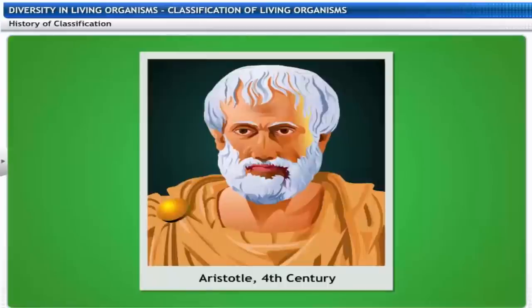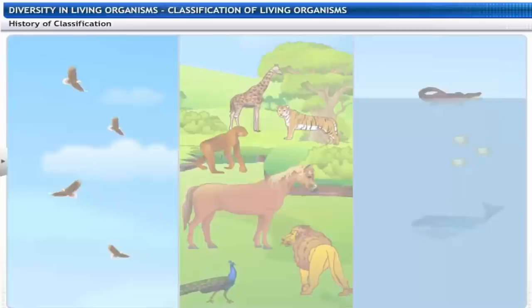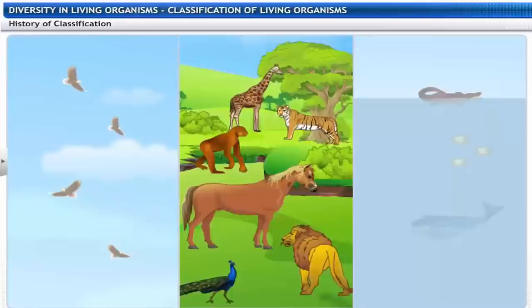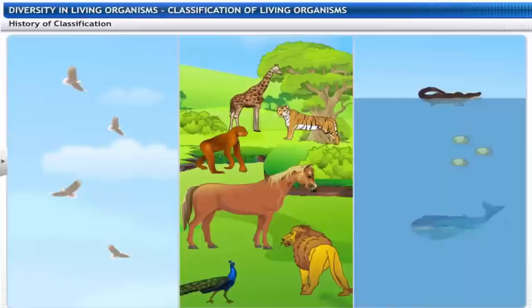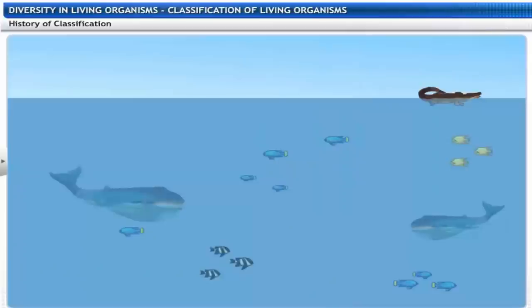In the fourth century, Aristotle, the Greek philosopher, classified animals based on whether they live on land, in water or in the air. But his classification was unscientific, as it placed unrelated organisms like fishes, crocodiles and whales living in the same habitat in the same group.